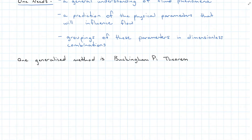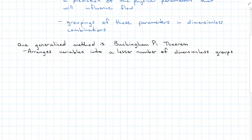One generalized method for dimensional analysis is the Buckingham Pi Theorem. The point of the Buckingham Pi Theorem is to arrange variables into a lesser number of dimensionless groups. So we have a lot of things to think about with one fluid problem, and if we can take all those variables and rearrange them to be a smaller bite to chew, it should be an easier problem to attack.